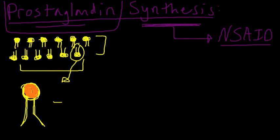So the first step in prostaglandin synthesis is the liberation of one of these tail groups into arachidonic acid.